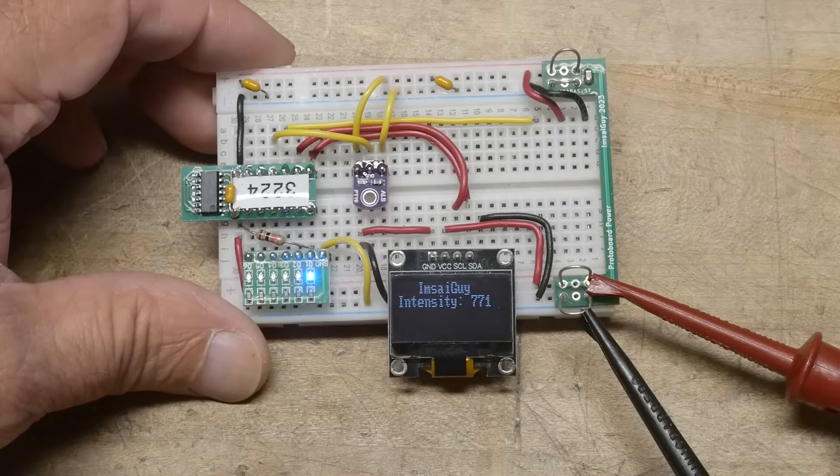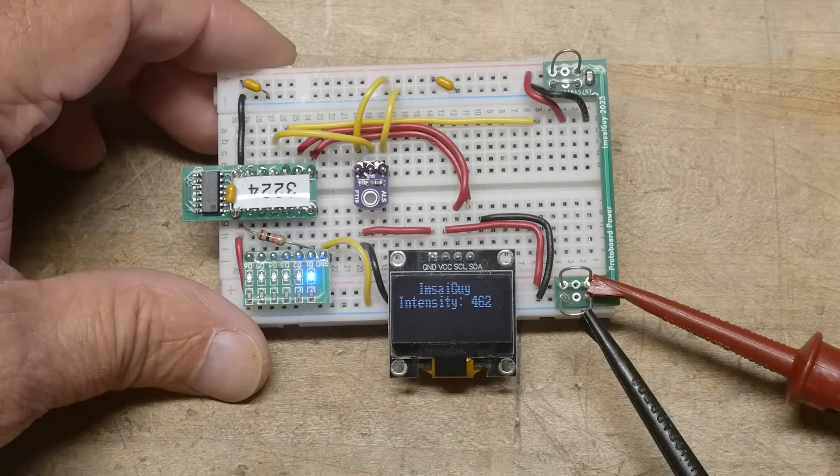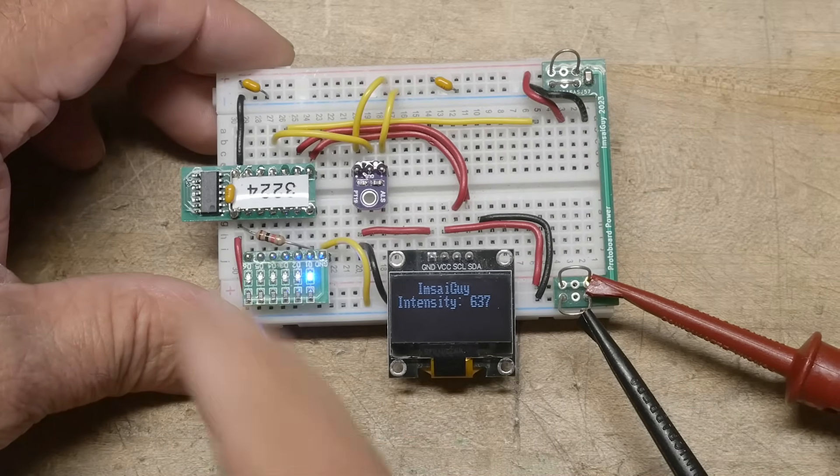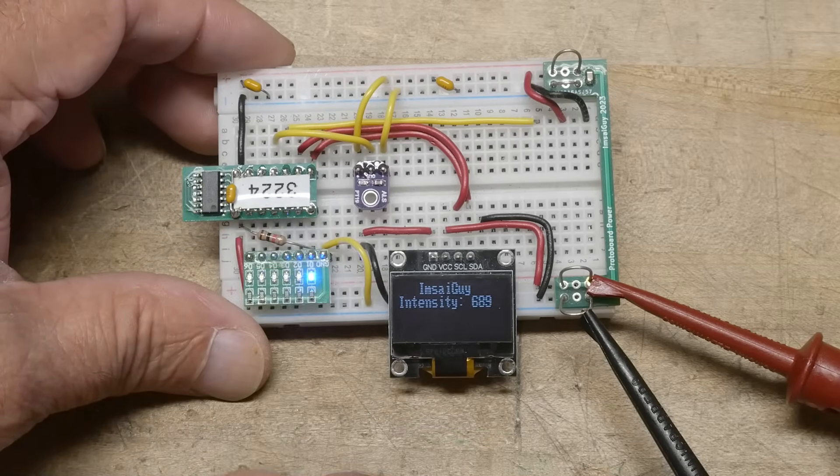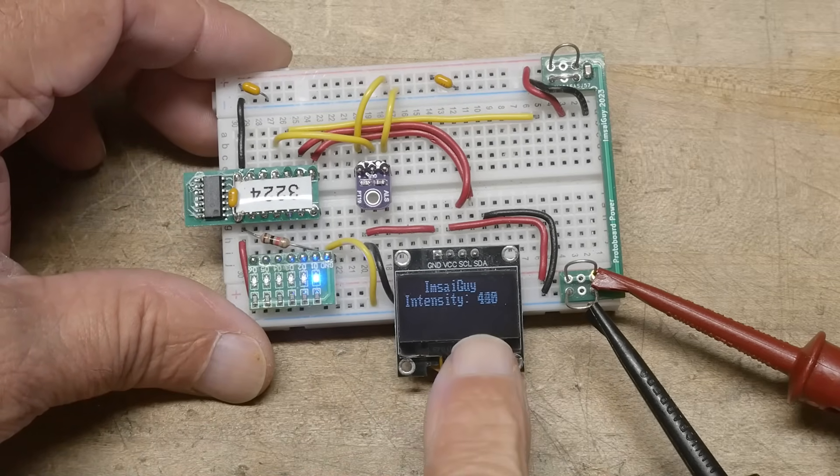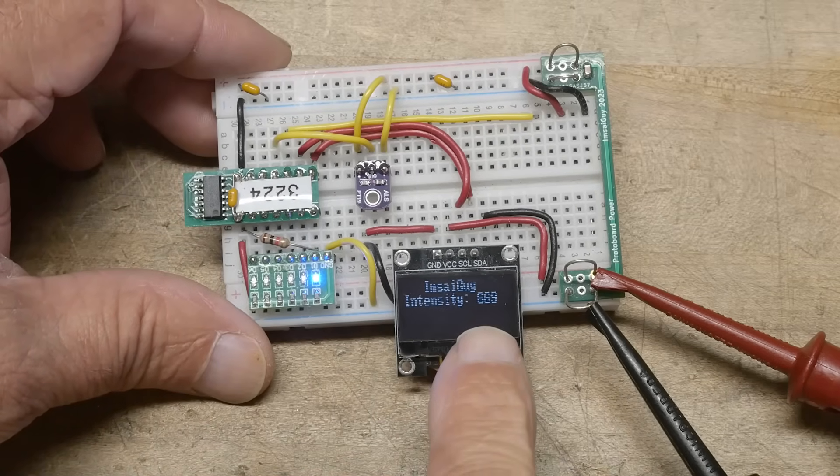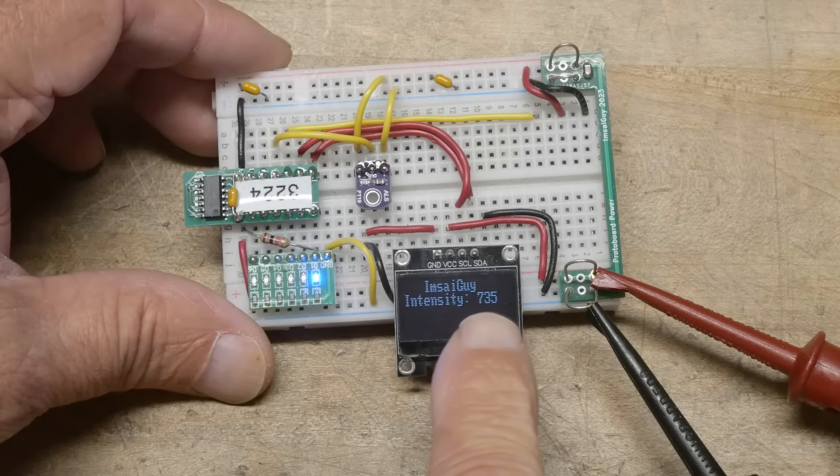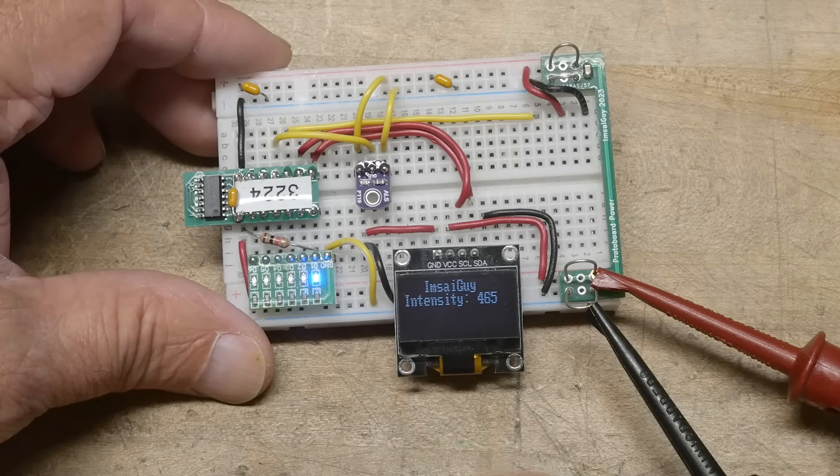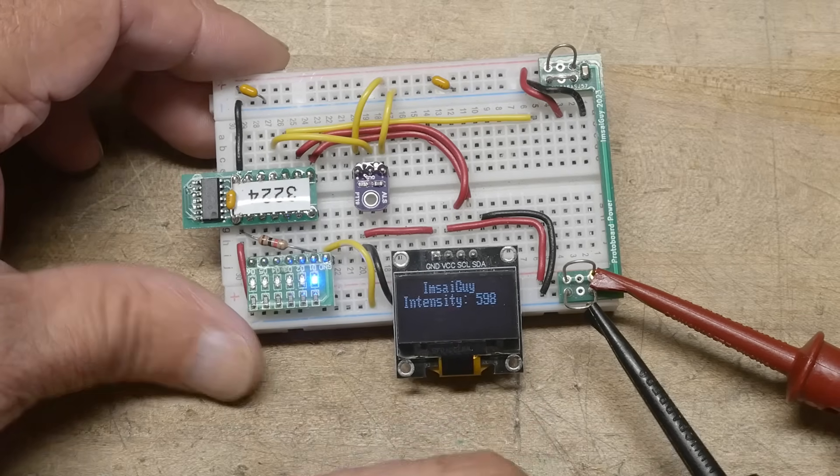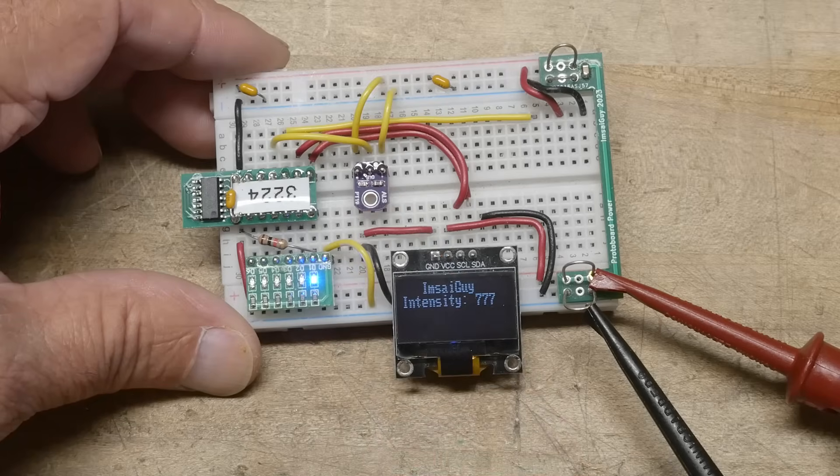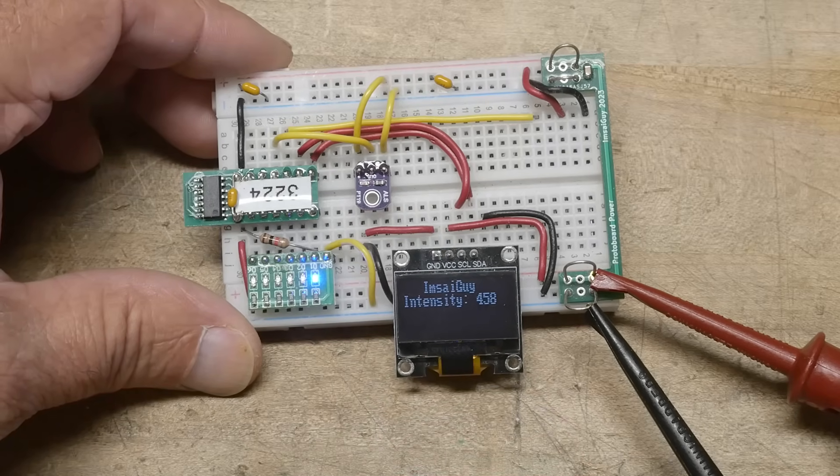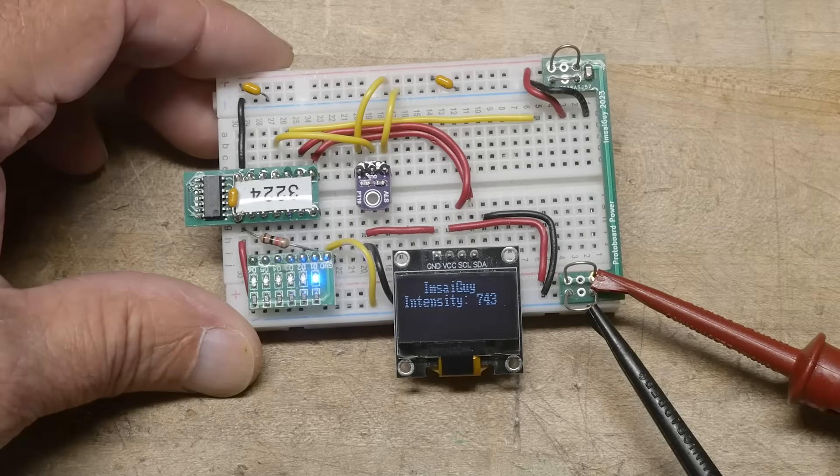And then we're just going to read that analog pin and that will be an A to D value, that'd be a 10-bit A to D value. And so we'll get a 10-bit A to D value, so it should go between zero and 1024. But there will be some voltage drop due to the diode and it won't get us all the way to 1024.